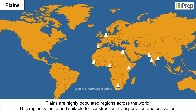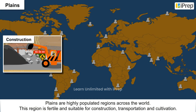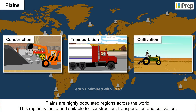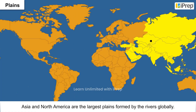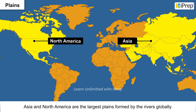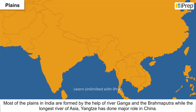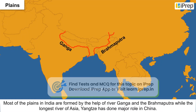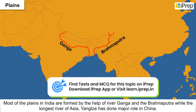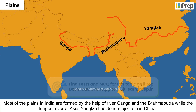Plains are highly populated regions across the world. This region is fertile and suitable for construction, transportation, and cultivation. Asia and North America have the largest plains formed by rivers globally. Most plains in India are formed by the River Ganga and the Brahmaputra, while the Yangtze — the longest river in Asia — has played a major role in China.